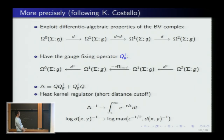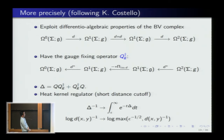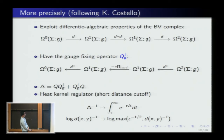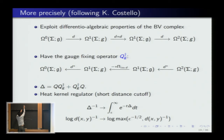The regularized propagator, written in a coordinate-invariant way using the heat kernel with small-time cutoff ε, is formally the inverse of the Laplacian on each eigenspace. The short-distance cutoff works because the logarithmic singularity — log of the inverse distance — is capped at log(max(ε^{-1/2}, dist^{-1})). ε is quadratically related to the spatial cutoff because of the quadratic relationship between time and space in the heat equation.